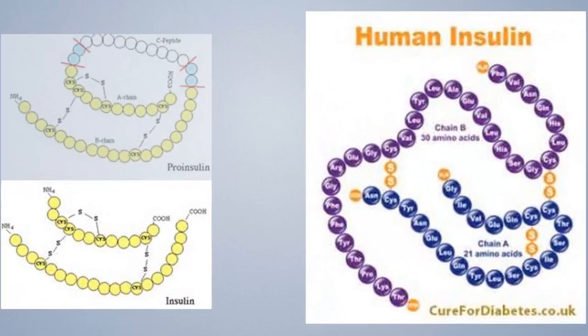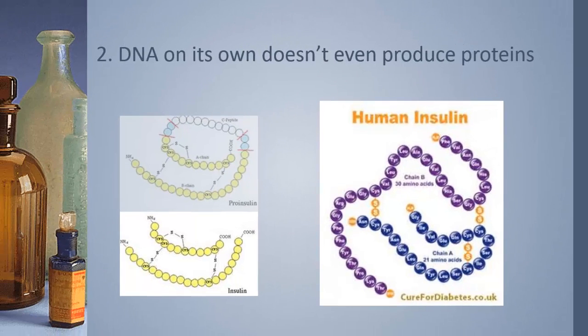They were recently able to create, based on a transformed DNA code that they put into bacteria, human insulin. But it did not work because somehow DNA did not know how to fold that insulin protein. So DNA on its own can't even produce proteins.